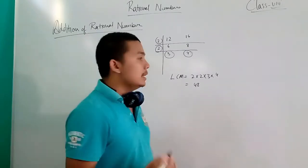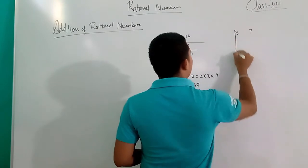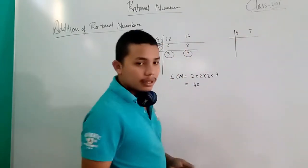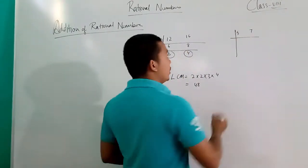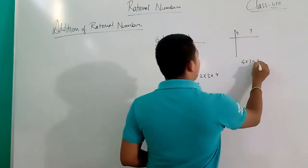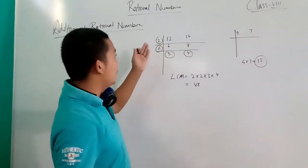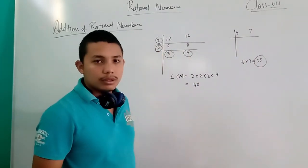Then 5 into 7, that means 5 into 7, that means 35 is the LCM of 5 into 7.